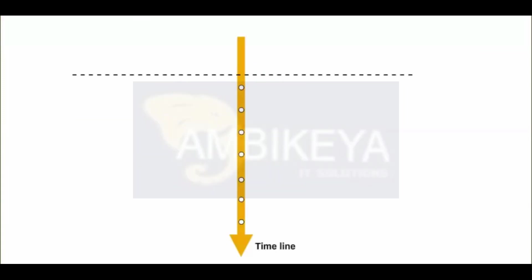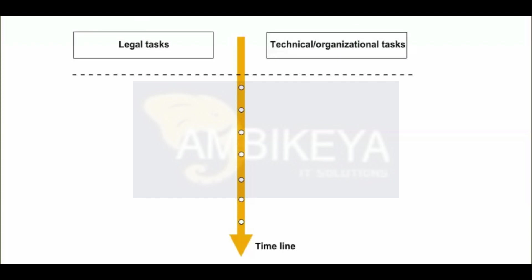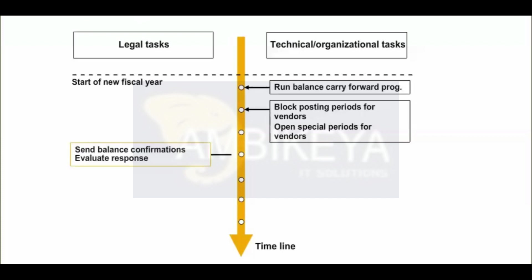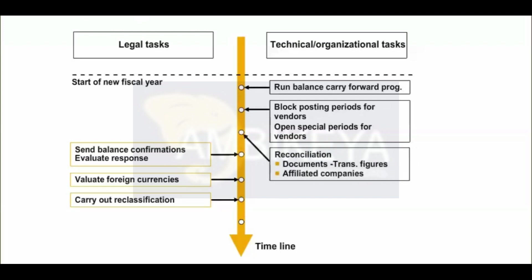Year-end closing can be divided into two main sections: legal requirements (procedures required by government authorities) and technical and organizational requirements (procedures that are technically required or needed to support the accounting organization). At the beginning of the fiscal year, the balance carry-forward program is run, carrying forward the balances of the vendor accounts to the next fiscal year. The posting periods of the old fiscal year are blocked and the special periods for closing postings for fiscal year-end adjustments are opened. Afterwards, the balances with selected vendors are confirmed. The foreign currency documents are evaluated and the accounts payable are regrouped according to remaining life, required only in certain countries. Once complete, the special periods can be closed.